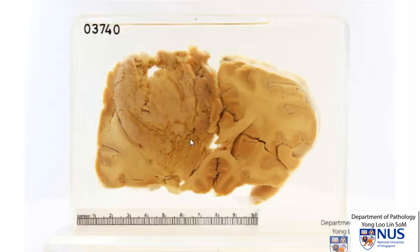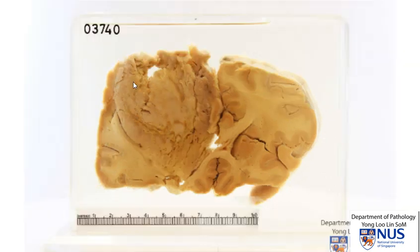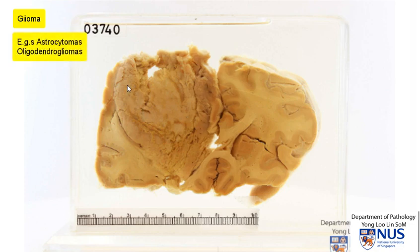So in summary, here is an example of an ill-defined irregular mass in the brain parenchyma occupying both the grey and the white matter. However, it has a fairly homogeneous cut surface, which is pale pinkish tan in colour, and there are areas of necrosis and cavitation, indicating likely a higher-grade tumour. Examples of glial tumours include astrocytomas as well as oligodendrogliomas.